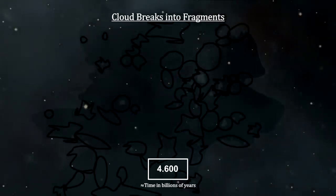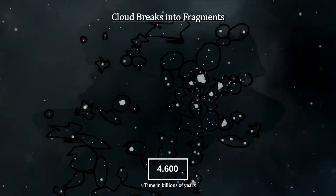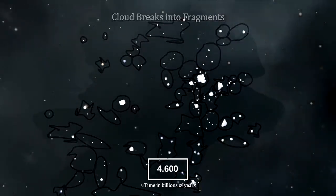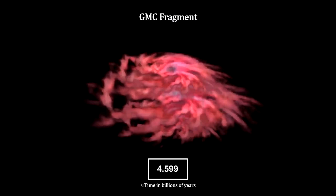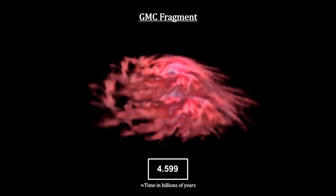Within a million years, the colliding giant molecular cloud broke up into fragments, with our fragment being one of them. Over the next million years, a circumstellar disk formed around a central object accreting mass from the disk material orbiting around it.